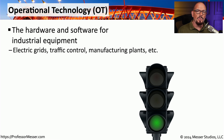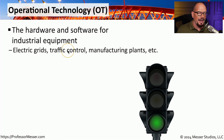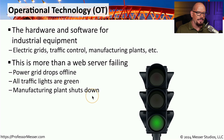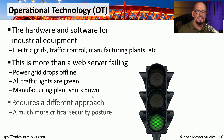Uptime and availability becomes even more important when you talk about operational technology, or OT. This could be systems designed to keep the electric grid up and running, for traffic control, or an entire manufacturing plant running on OT equipment. When a failure occurs in this type of environment, the results can be very wide-ranging — traffic lights may not work properly, manufacturing plants may have to shut down completely, or there could be issues with power generation and distribution across the grid. This is a very good example of where network segmentation can create a stronger security posture and keep these systems up and running all the time.